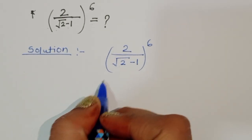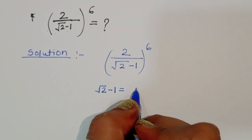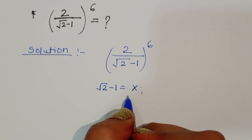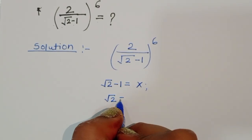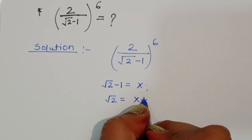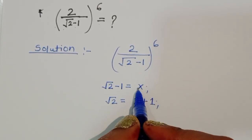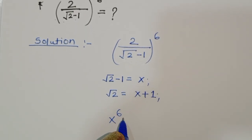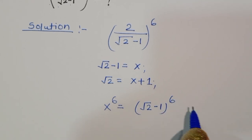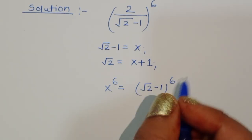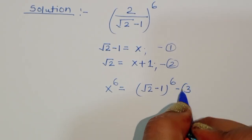We can do one thing here: let's consider square root of 2 minus 1 equal to x. So we can say square root of 2 is equal to x plus 1. Now x power 6 is equal to square root of 2 minus 1 to the whole power 6. This is equation number 1, equation number 2, and equation number 3.